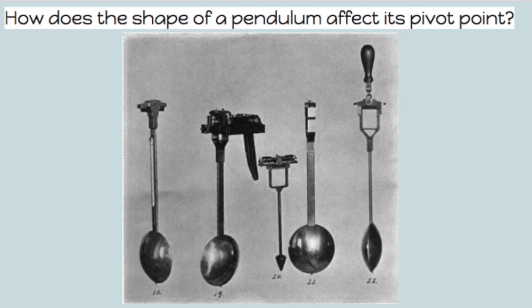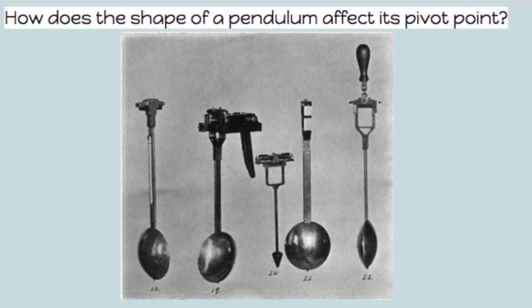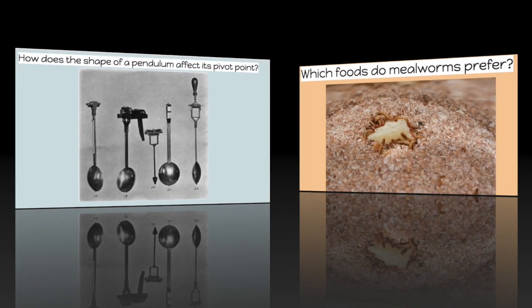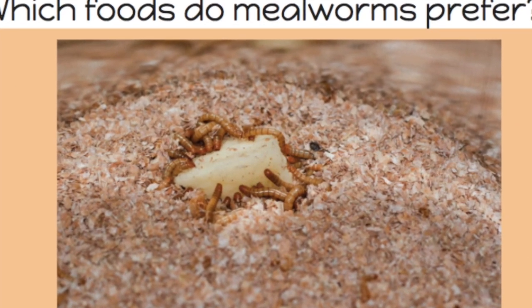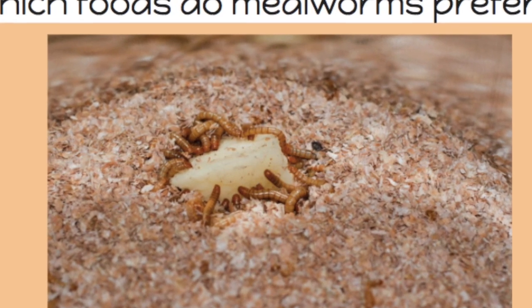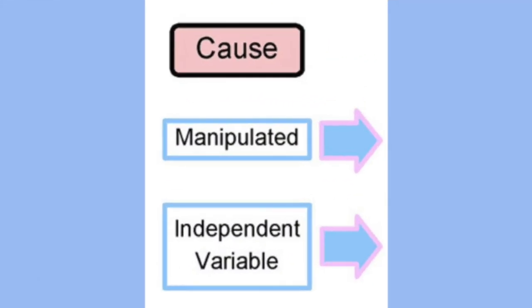Examples of testable questions: How does the shape of a pendulum's pivot point affect its pivot point? Which foods do mealworms prefer? How does the salinity level affect the growth of algae in a fish tank?